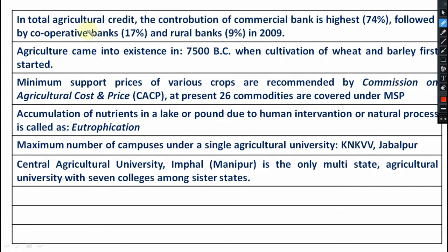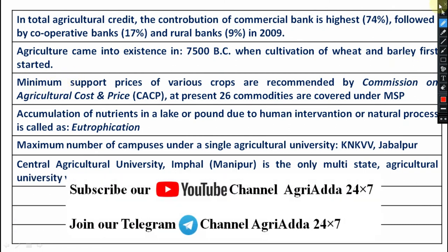For total agricultural credit, the contribution of commercial banks is highest at 74%, followed by cooperative banks at 17%, and rural banks at 9%, according to 2009 data. Agriculture came into existence in 7500 BC when cultivation of wheat and barley first started.